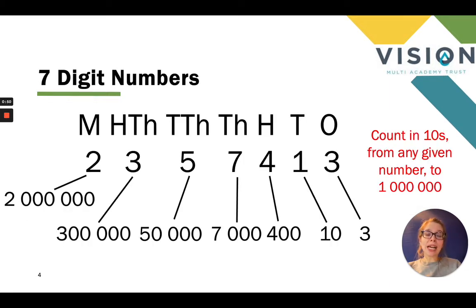So let's have a look at seven digit numbers in a little bit more detail. On here I have put the number 2,357,413. I've put the place value headings above the top and broken it down underneath to show the value of each digit.